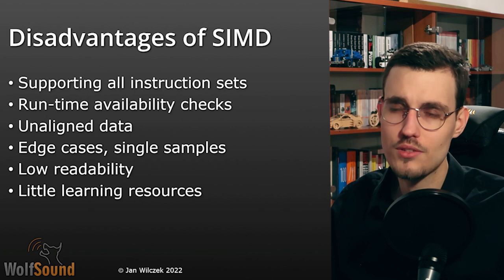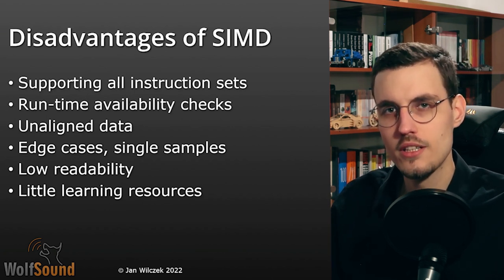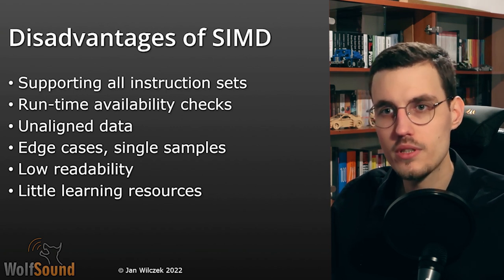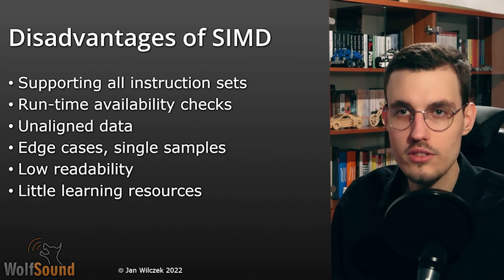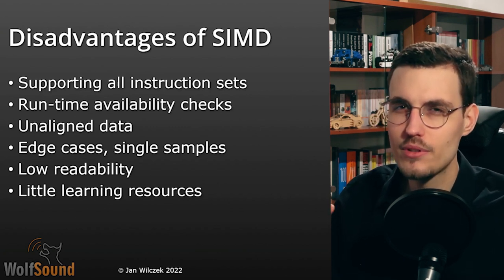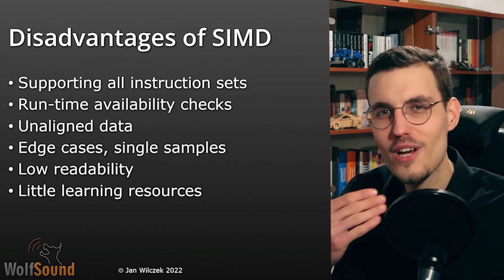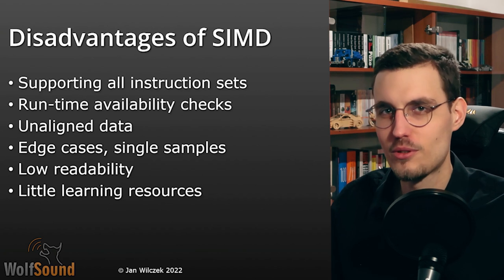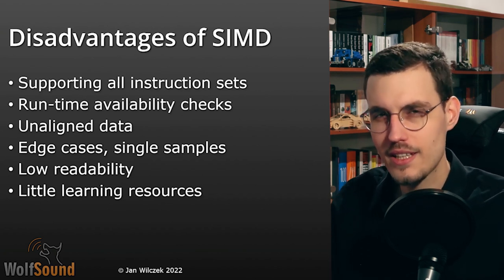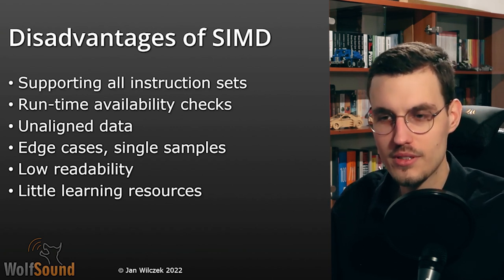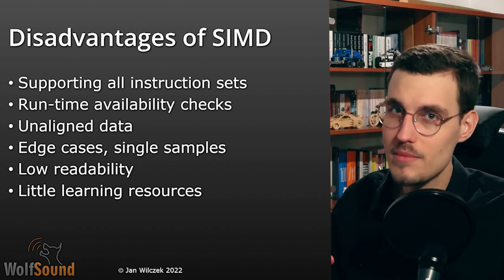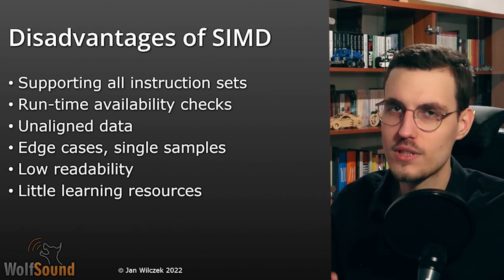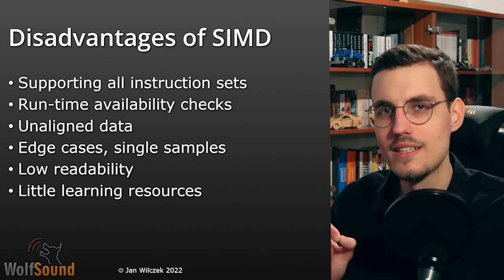Additionally, SIMD instructions are often hard to read. The mnemonics — typically C function names — encode whether we're operating on floating-point numbers, how many variables fit in a register, and what operation to perform, and these abbreviations are often very hard to read and spell. Finally, there are quite few learning resources on the topic, which is one reason for making this video. Now that you know what SIMD is, let's implement a very simple SIMD example.